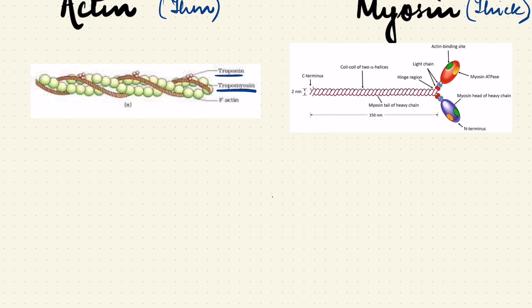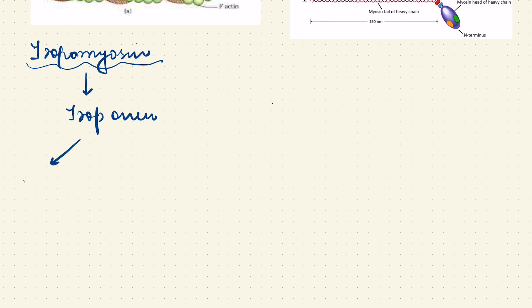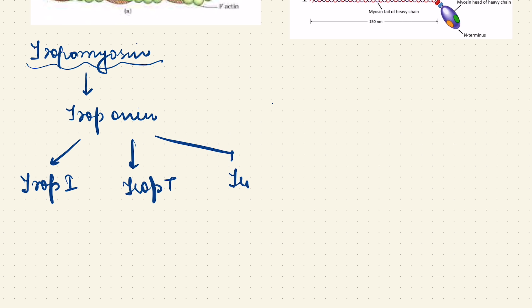Tropomyosin acts like a curtain over troponin. Troponin is the active site of actin, and to cover those active sites we have tropomyosin. Troponin is made up of three subunits: Trop-I, Trop-T, and Trop-C. Muscle contraction starts when calcium binds to Trop-C, causing Trop-I and Trop-T to become uncovered — these are the active sites — and then myosin binds to them, initiating the mechanism of muscle contraction.